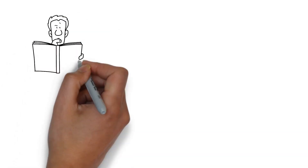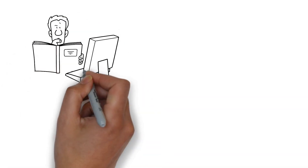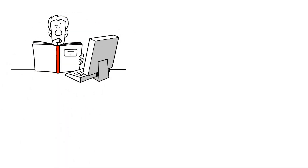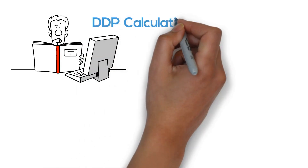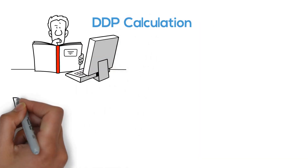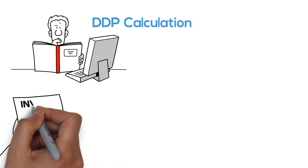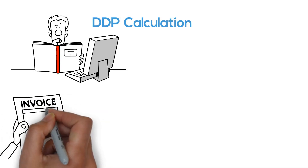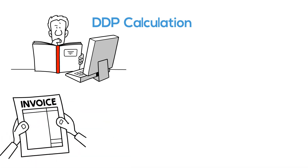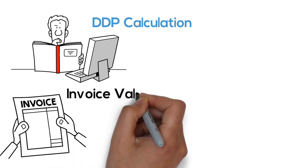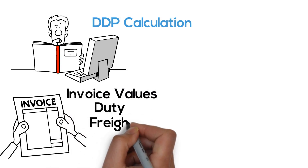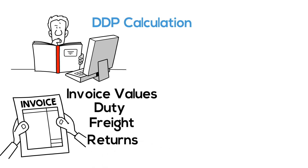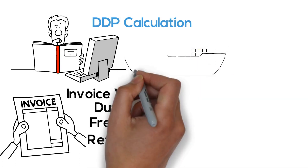The most difficult calculations we come across for the exam involve DDP calculations. The reason they're complicated is under DDP all of your charges are included in the invoice value. So it includes duty, it includes freight, it includes insurance — it includes all of those values in the invoice value.